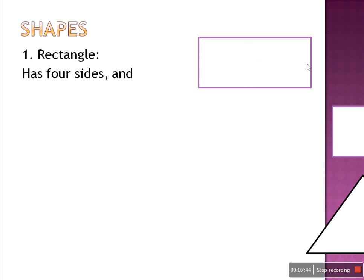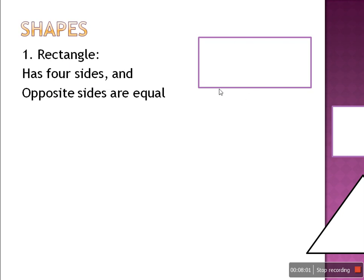This side is equal, and the opposite side is also equal. So a rectangle is a closed shape with four sides and opposite sides are equal. This side is called length — this length is equal to the opposite length. And this is called breadth — this breadth is equal to the opposite breadth. So opposite sides are equal.